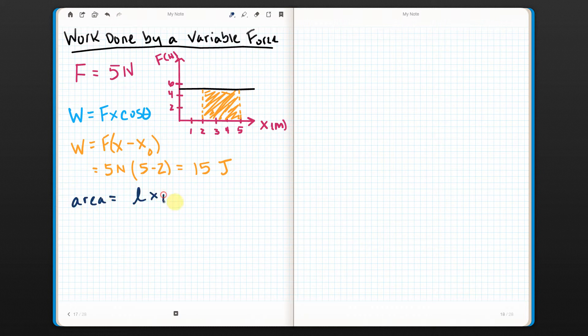Area equals length times width. In this case, what I've got here is I've got a length that's 1, 2, 3 meters. And I've got a width that's 5 newtons. Well, that's interesting. Look what I get. I get 15 newtons times meters, which is kilogram meters squared per second squared. That's a joule. Well, that's interesting. Look at that.